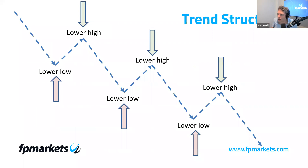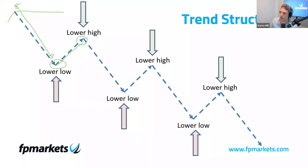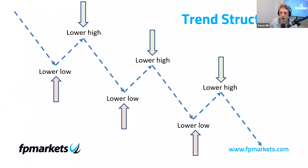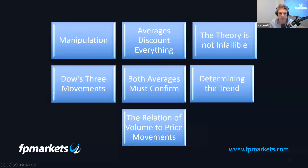A downtrend consists of a series of lower highs and lower lows. It begins with a clear down move forming a lower low, then a lower high that doesn't penetrate the prior swing high, then another lower low breaking the previous one. This continues until we break above the last lower high, which in basic trend studies is viewed as a trend reversal. There are a number of tools we use to identify trend reversals — trend lines, moving averages, and all that good stuff.